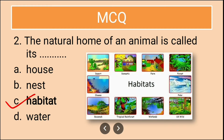So the desert is the natural habitat, or natural home, of a camel. There are a lot of such natural homes or habitats — like a forest, a wetland, or an ocean.